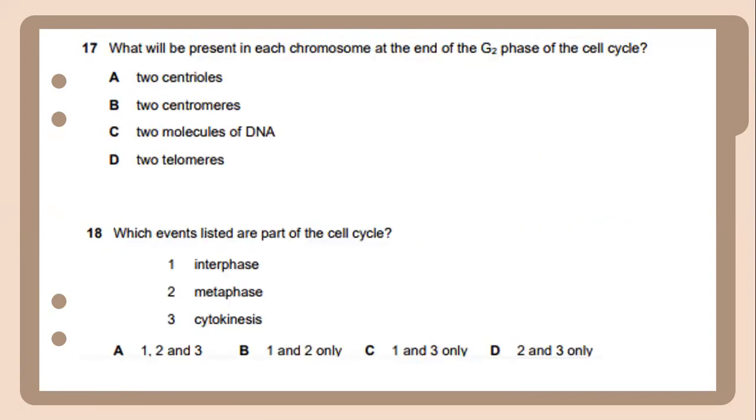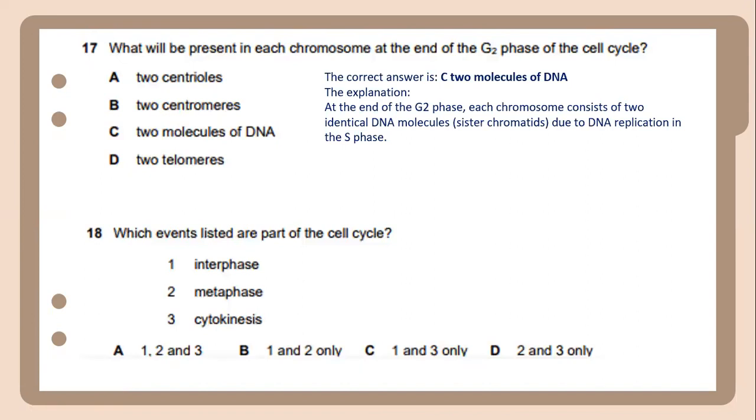What will be present in each chromosome at the end of the G2 phase of the cell cycle? The correct answer is two molecules of DNA. This can be explained through when at the end of the G2 phase, each chromosome consists of two identical DNA molecules, which are called sister chromatids, due to DNA replication in the S phase, which happens earlier in the cell cycle.